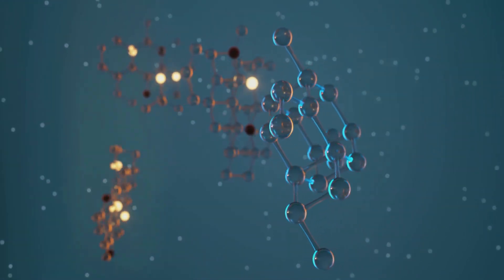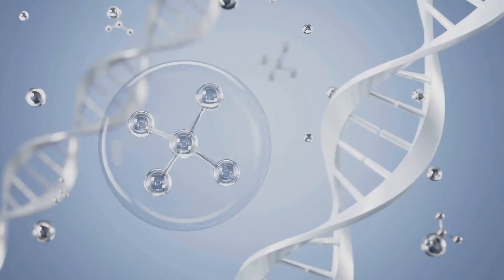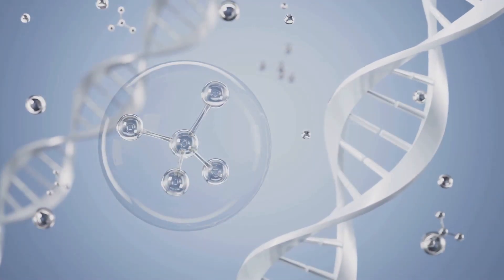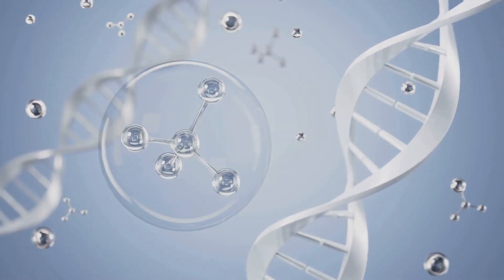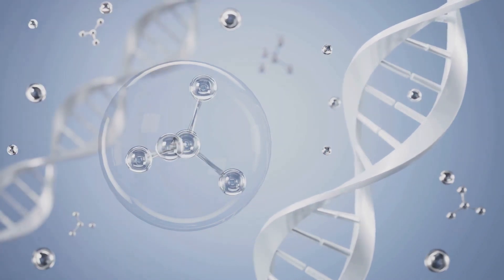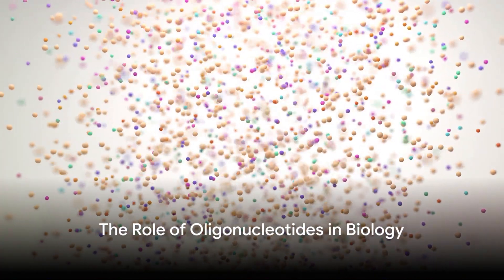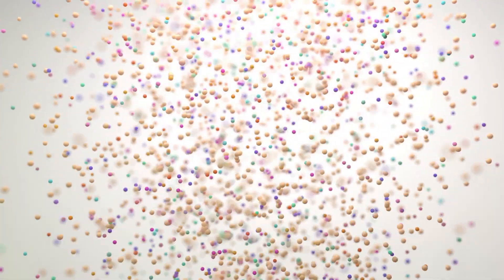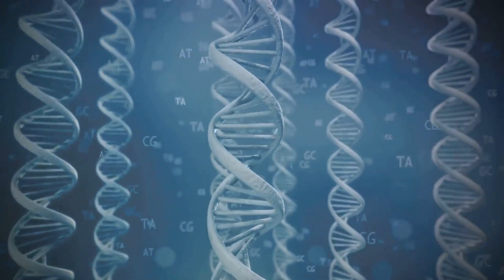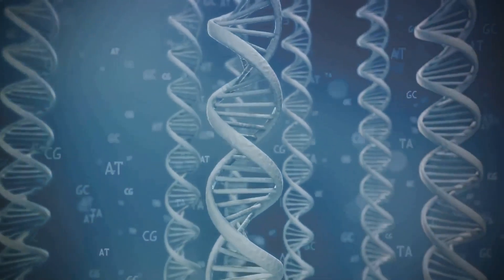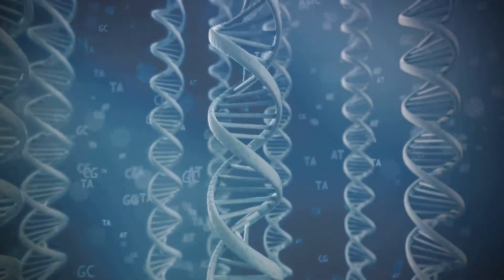Peptides are large biological molecules composed of amino acids. These components are the building blocks of life, forming a diverse range of structures and functions. Then we have oligonucleotides — short chains composed of nucleotide units. These are key players in the world of DNA and RNA, where they form the basis of genetic information transfer.